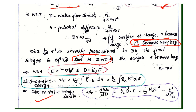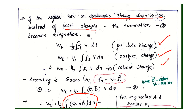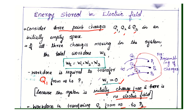Similarly, substituting E equals D divided by epsilon-zero gives WE equals the integral of D squared divided by 2·epsilon-zero dv. This is the final answer for energy stored in an electric field. Thank you.